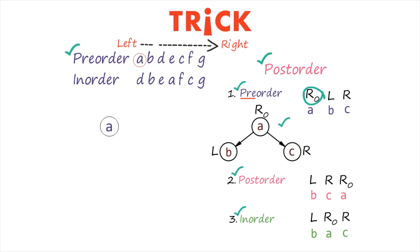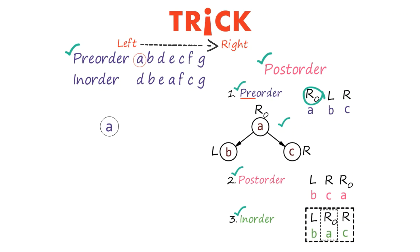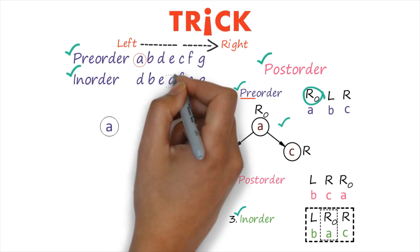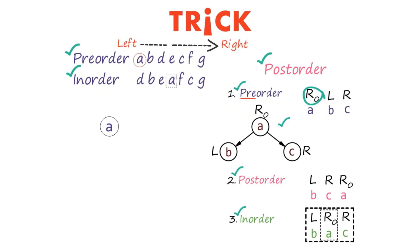Another important point: according to the logic of in-order traversal, the root comes in the middle of the left and right subtree. So if A is the root of the tree, from the in-order traversal we can easily identify which portion is the left subtree and which is the right subtree. Pre-order is useful for identifying the root; in-order is useful for identifying which portions belong to the left subtree and which to the right subtree, allowing us to construct the tree.